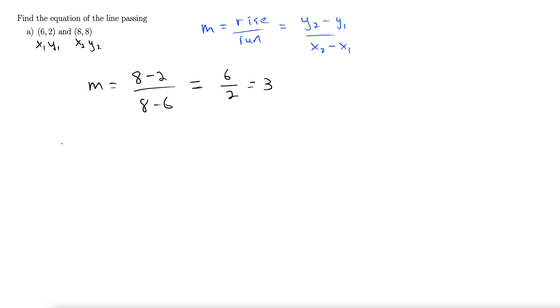So there's our slope. Now we need a full-on equation of the line. We use our point-slope form. Point-slope form is y minus y1 equals m times x minus x1.